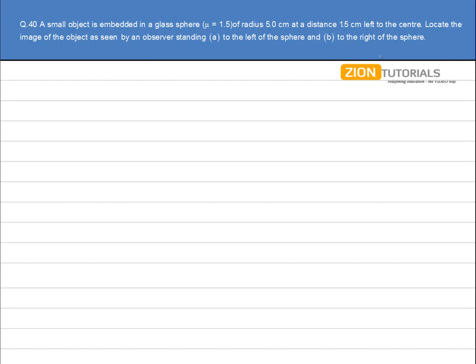A small object is embedded in a glass sphere of radius 5 cm at a distance 1.5 cm left to the center. Locate the image of the object as seen by an observer standing to the left of the sphere and to the right of the sphere.